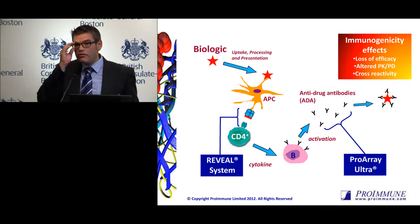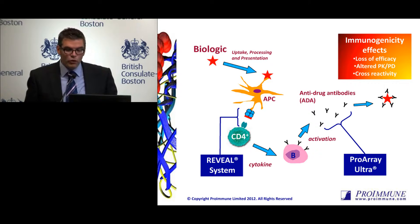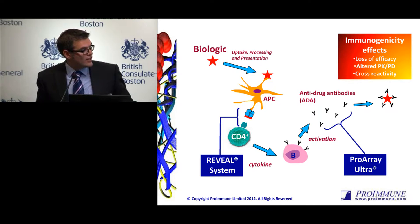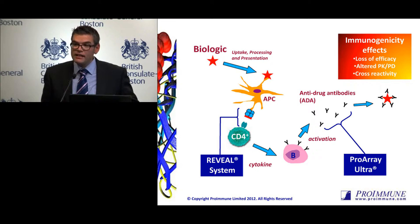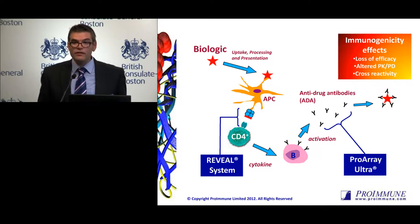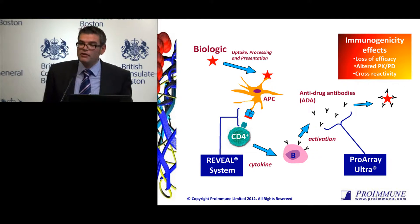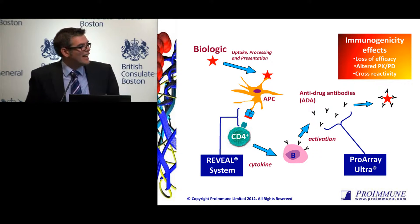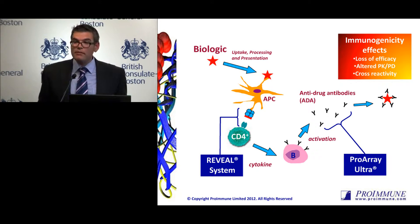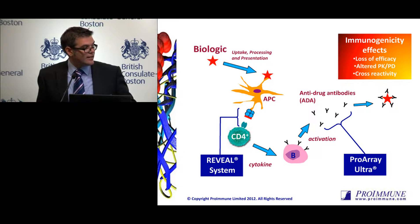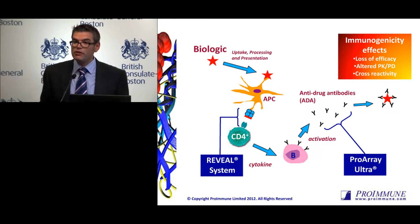There are a number of ways we can try and understand what's going on in the system. One of these is our technologies, which on the whole focus on this interaction between the T cell receptor and the MHC peptide complex. T cells are a key driver of immunogenicity, but by themselves aren't the sole cause. You do need the B cells to then produce anti-drug antibodies, which ultimately can be one of the problems.